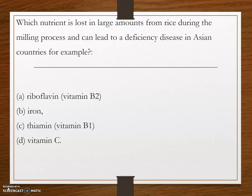Next question: which nutrient is lost in large amounts from rice during the milling process and leads to a deficiency disease in Asian countries? Options are: option A, riboflavin; option B, iron; option C, thiamine; and option D, vitamin C. The answer is option C, thiamine, or vitamin B1. Thiamine will be lost during the milling process of rice, leading to the deficiency disease beriberi.